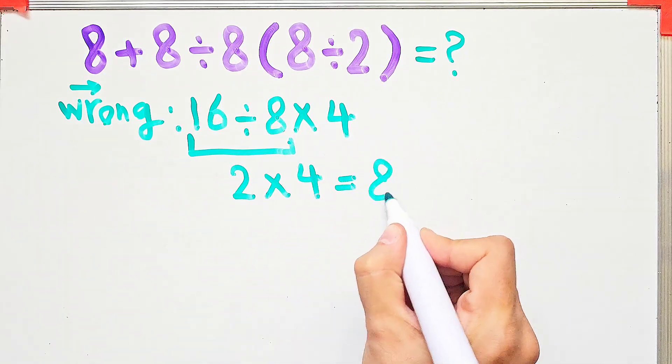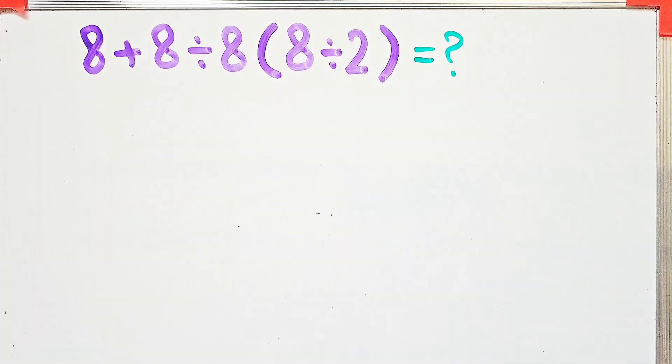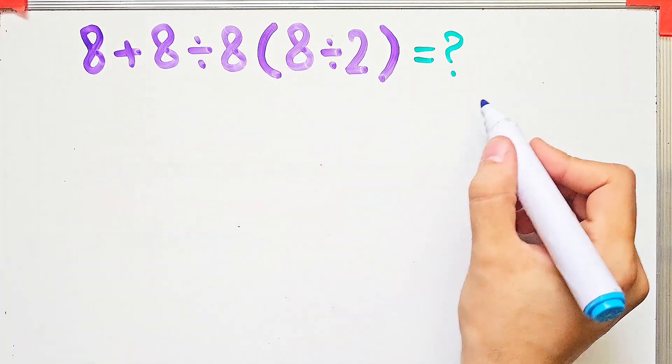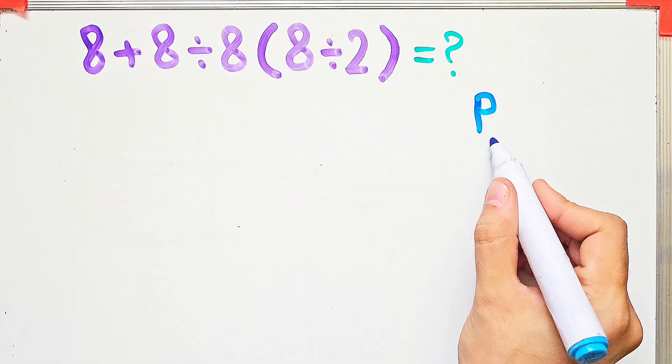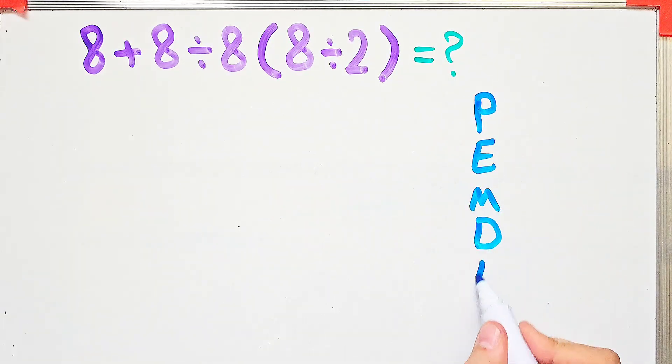But this answer is wrong. Let's solve this question step by step together. To solve this question, we need to follow the PEMDAS rule. PEMDAS shows the priority of mathematical operations. If you don't pay attention to this rule, you get the wrong answer.